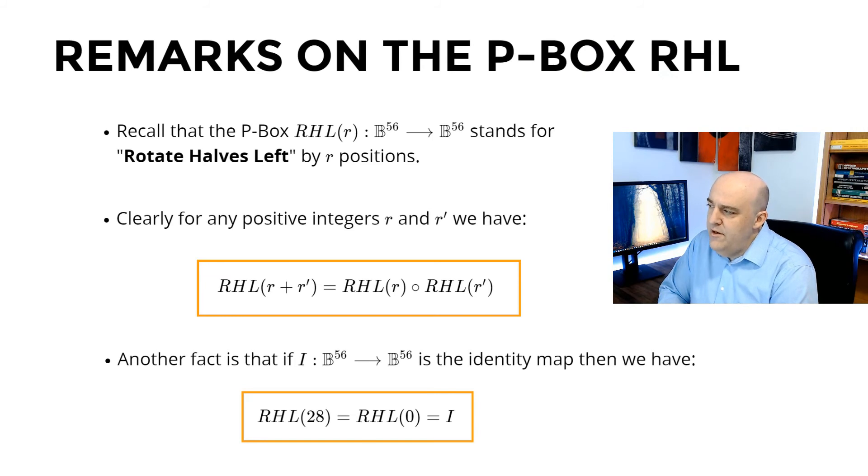Now let's just make a few remarks on the P-box RHL. Let's just recall what RHL does. We take a 56-bit input, imagine it in two 28-bit halves. And then we take each of those halves and shift them left by R positions. What if we do two rotate halves left in a row? So we rotate the halves left by R prime, and then we rotate the halves left by R. We can see that this is just the same thing as doing the single P-box RHL, where we rotate by R plus R prime. So RHL is kind of additive in that sense.